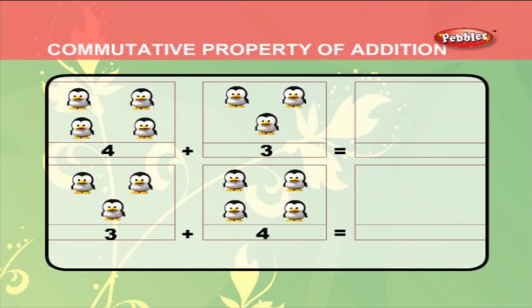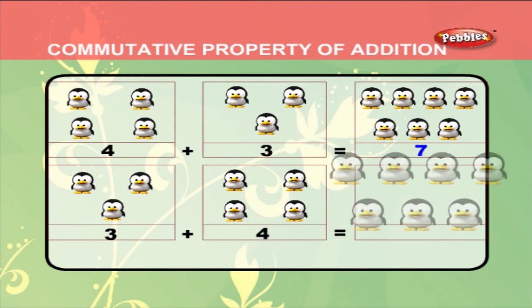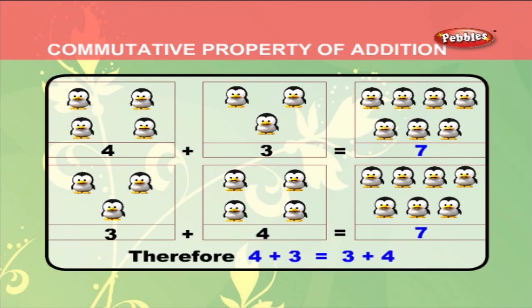Let us see one more example. There are 1, 2, 3, 4 birds in the first box and 1, 2, 3 birds in the second box. That is 3 plus 4 which is equal to 7. Again, below there are 1, 2, 3 birds in the first box and 1, 2, 3, 4 birds in the second box. That is 3 plus 4 which is also equal to 7. Therefore, 4 plus 3 is equal to 3 plus 4.